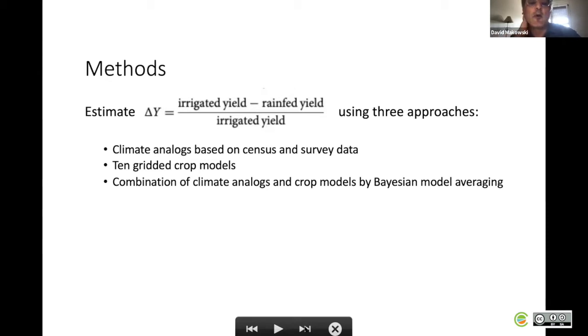We can see delta Y as a kind of yield gap due to lack of irrigation. This delta Y quantity was estimated using three approaches that I will detail now.